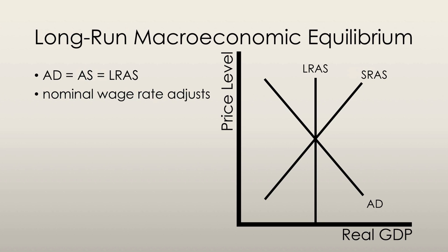When the economy is not in long-run equilibrium, the money wage rate will adjust. If the money wage rate is too high, then short-run equilibrium is below potential GDP, and unemployment is above the natural rate. So with an excess supply of labor, the money wage rate falls.